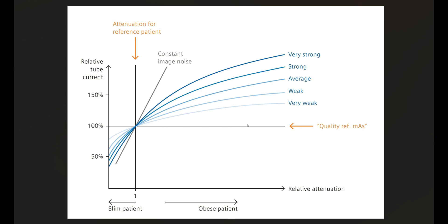We can see what very strong, strong, average, weak, and very weak look like for our reference patient, as well as for slim and obese patients. The midpoint represents the attenuation for the reference patient. If we apply a very weak setting for large patients, the modulation curve has a muted effect as patients get larger. With a very strong setting, CareDose 4D acts much more aggressively on larger patients.